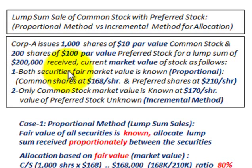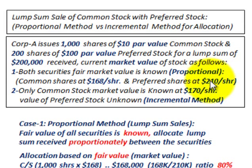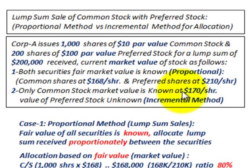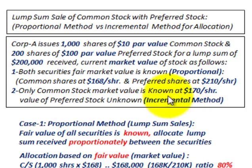In Case 1, both securities' fair market values are known, so we use the proportional method. Common shares are selling at $168 per share and preferred shares at $210 per share on the market. In Case 2, only the common stock's market value is known — $170 per share — while the preferred stock's fair value is unknown. This is where we use the incremental method to allocate the sale.